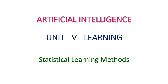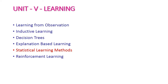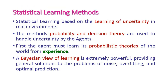Good morning friends, welcome to today's artificial intelligence class. Today we are going to see the statistical learning methods, which is the second part of fifth unit and an important question. Statistical learning methods are based on learning under uncertainty in the real environment — that is, the environment is an uncertain environment.